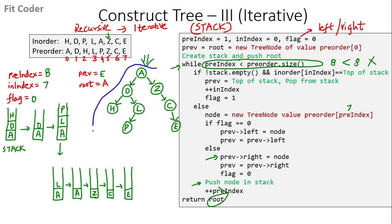This is the tree obtained using the iterative approach. Essentially, we push left nodes onto the stack until the top of the stack equals the in-order traversal value. Once they are equal, we pop from the stack and then set the left or right node. The flag determines whether we set the left node or the right node.